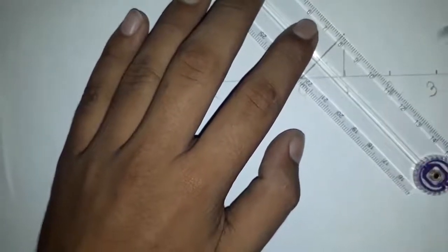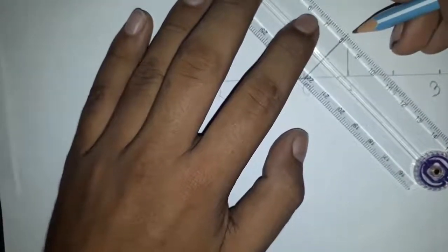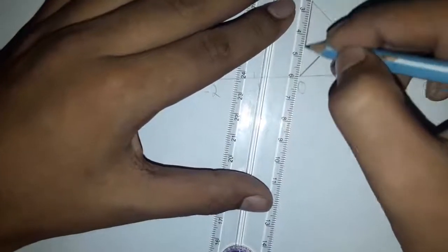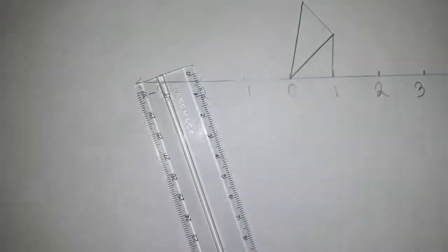Now take the scale and join it, and again take it two centimeters. This will be your root tree. Again I have to draw more.